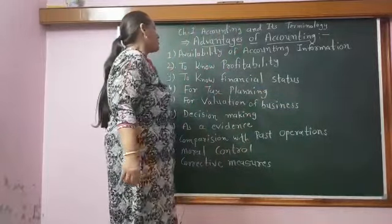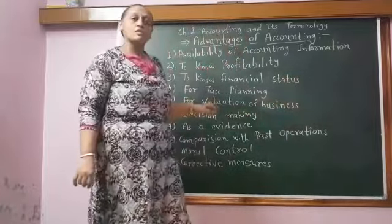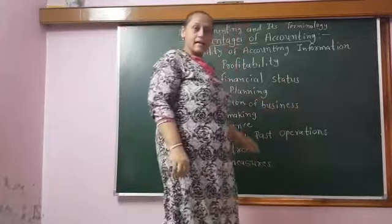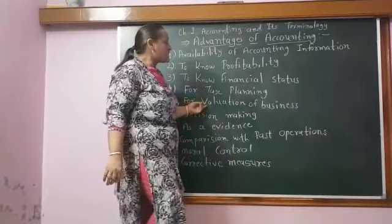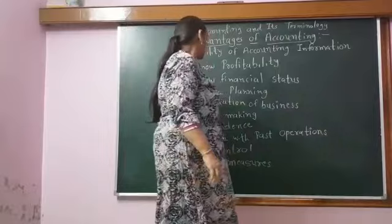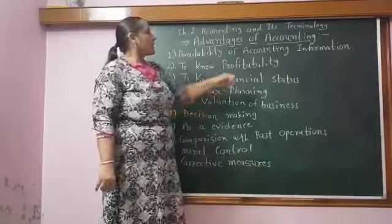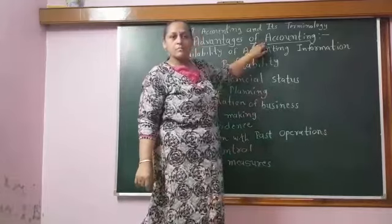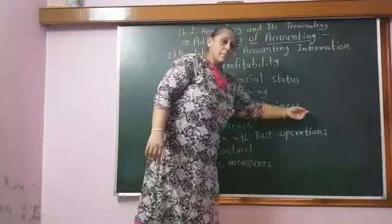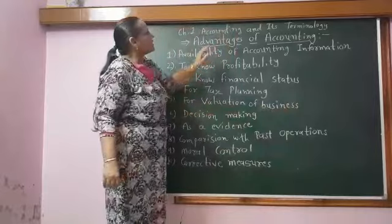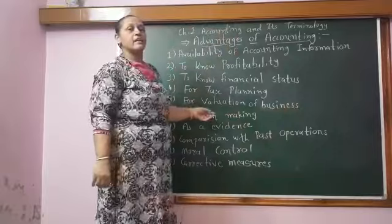The fifth advantage is valuation of the business. Sometimes, the business owner wants to sell his business. For selling the business, there is a need for valuation — that means determining for how much the business is going to be sold. For that, we need to know from the accounts what the profitability of the business is, and from the profitability we can make the valuation of the business. So for that purpose, we need to write the books of account.